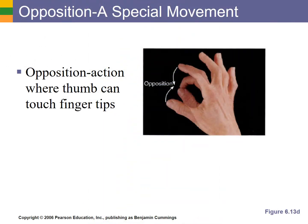Opposition is the ability to touch our thumb to our fingers. You often hear that one thing that distinguishes humans from other animals is that we have opposable thumbs. Most animals cannot do this.